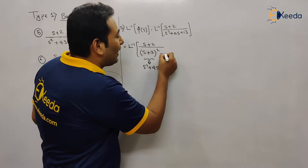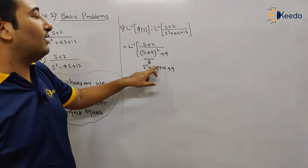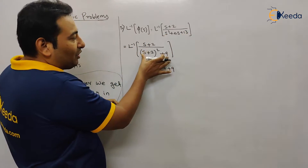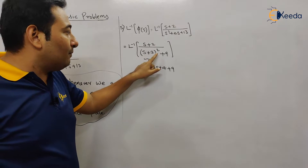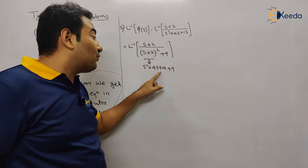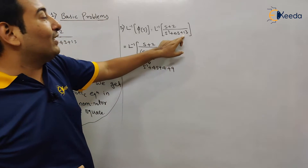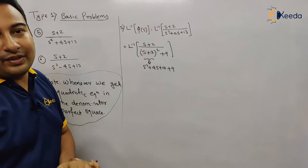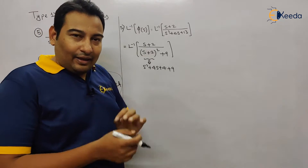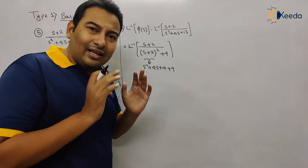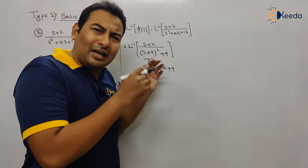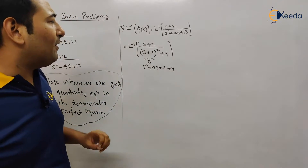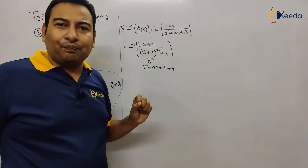Therefore I need to add 9 to it so that it will become 13. If you open (s+2)² you get s² + 4s + 4, but we want 13, so we need to add 9. If it is not clear, pause this video and go back. Don't worry — we'll do it a number of times throughout the chapter so it will become very clear.